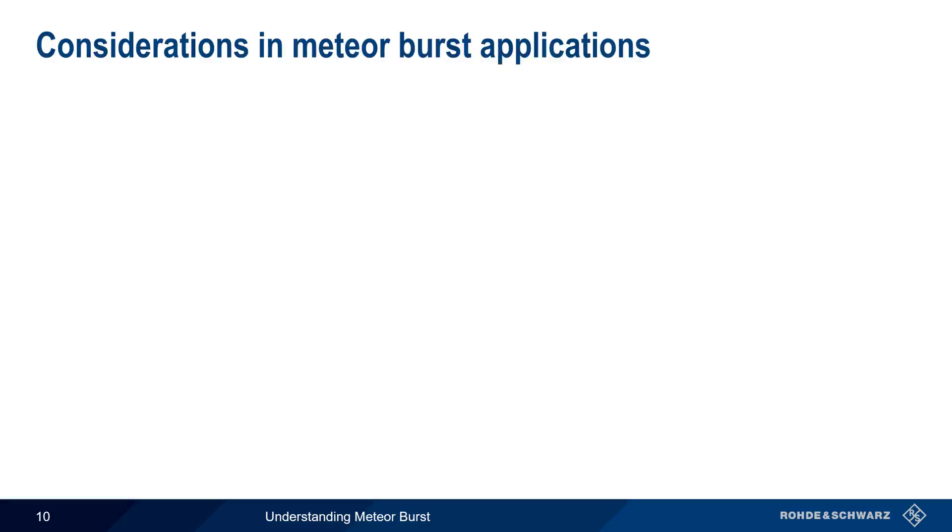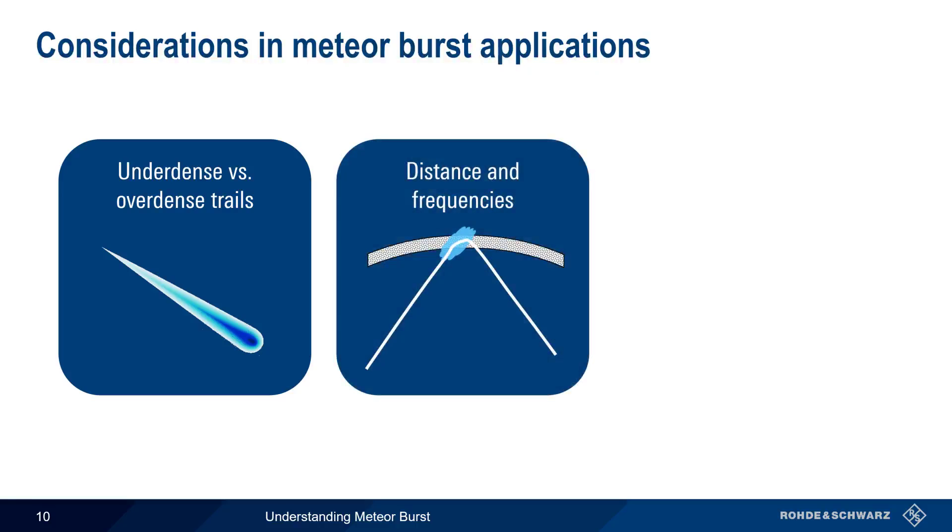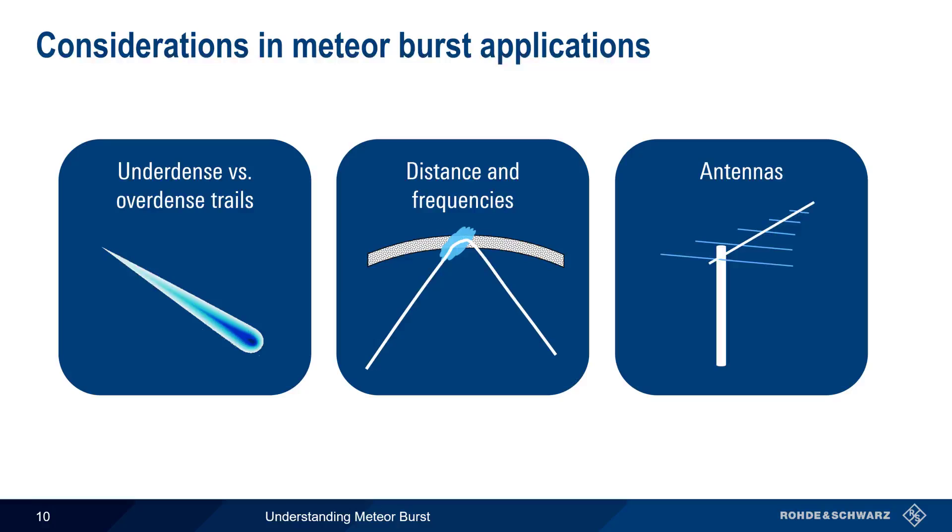There are three main considerations when it comes to using meteor bursts for communications. These are the difference between so-called under-dense and over-dense trails, the maximum achievable distances and frequencies, and the types and orientations of antennas used for meteor burst communications.